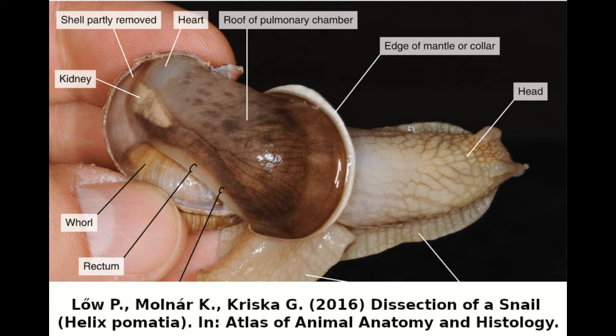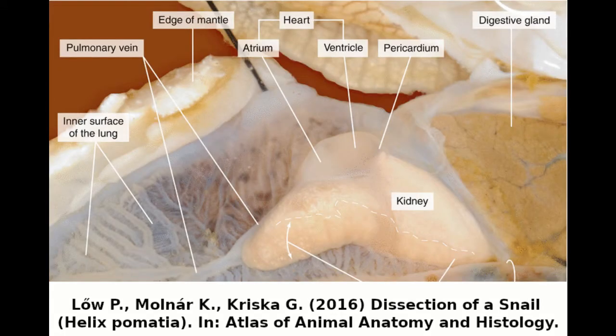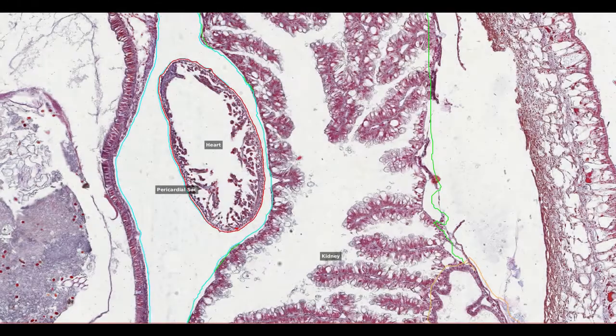Here is a snail with part of the shell removed. You can see the kidney here, right next to the heart. When it's dissected out, you can see the kidney as an orangey-yellow sac adhered to the pericardium, the membrane which houses the heart. This is what it looks like on a microscope slide.